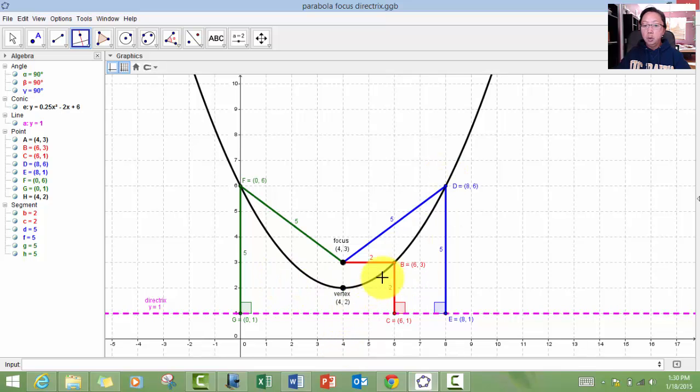So we will need to draw a line perpendicular to the directrix and a line connecting the point to the focus. Notice that the lines are equidistant. That means we will need to use the distance formula to find the distance of these two line segments. So here we go.